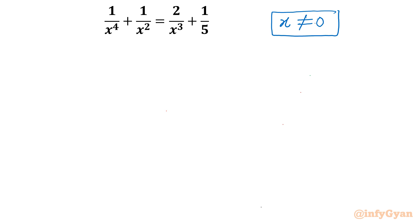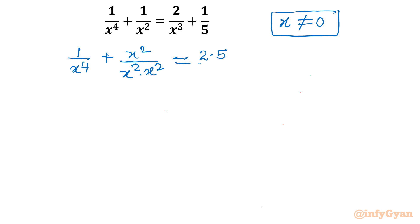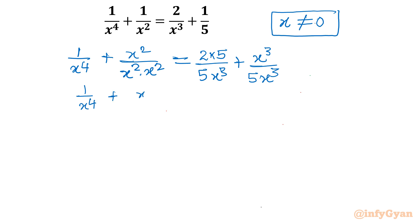Now let's rationalize — or you can take LCM also. I will keep 1 over x⁴ as it is, then multiply the numerator and denominator of the second term only, writing x² times x². Similarly, on the right-hand side, I multiply by 5 over 5 and by x³ over x³ to make the denominators common. So we get: 1 over x⁴ plus x² over x⁴ equals 10 over 5x³ plus x³ over 5x³.